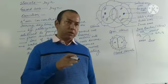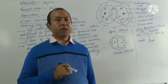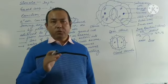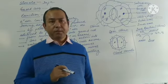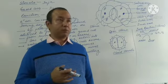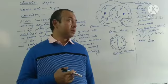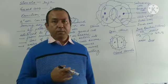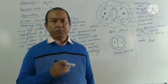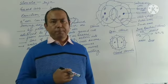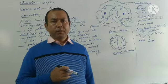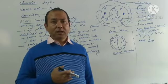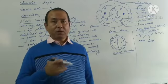Before going into this topic, we must first understand what stomata are. What are stomata? Stomata are minute openings present on the surface of a leaf, which help in the exchange of gases and water vapor, as happens in the case of transpiration.